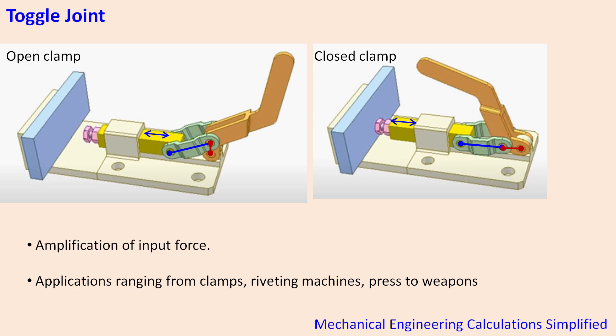You might have seen this kind of toggle clamps everywhere in workshops and other places, and there are many applications of toggle joint. In fact, basically a toggle joint is used to amplify the input force.